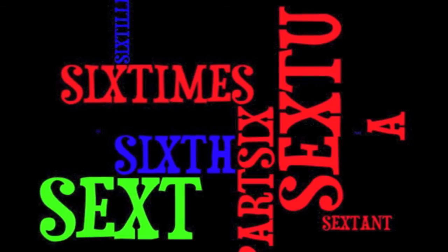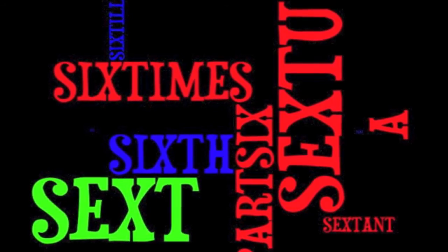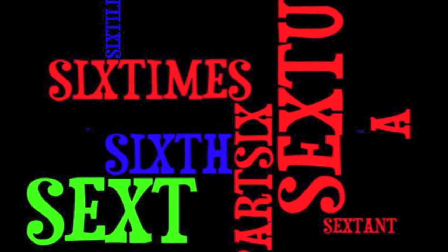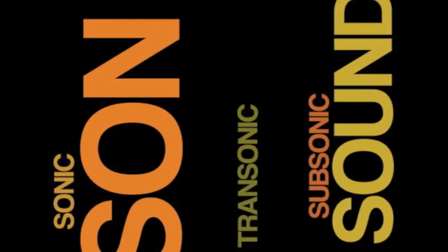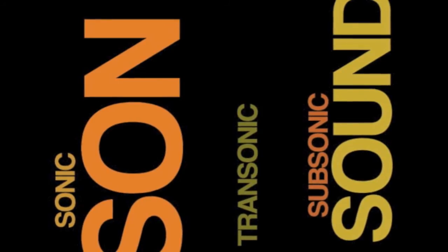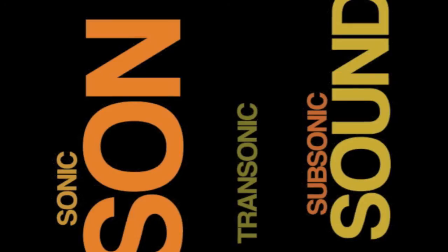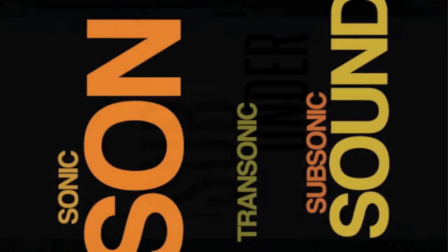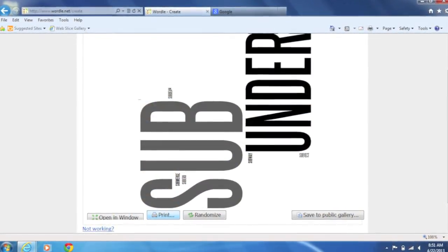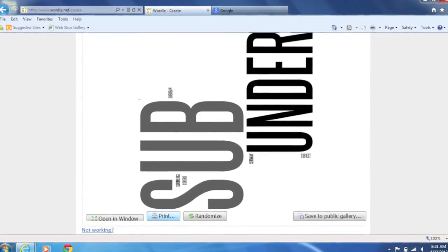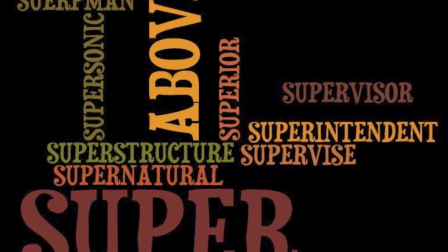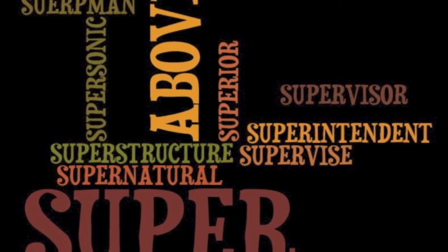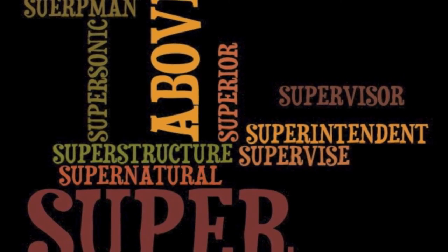Sext means six, such as in sextant or six times. Son means sound, such as in sonic, transonic, subsonic, and supersonic. Sub means under, such as in submarine, subterranean, and submerge. And super means the opposite — above — such as supernatural, supervise, superintendent, supervisor, and superman.